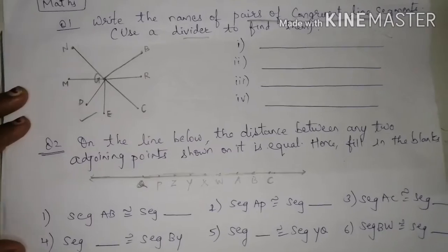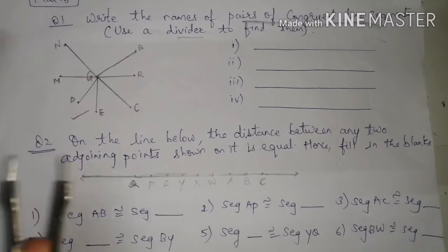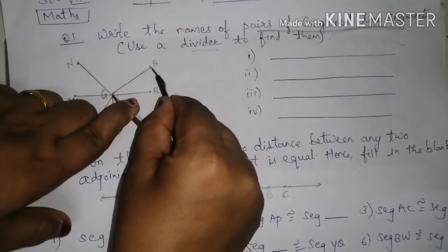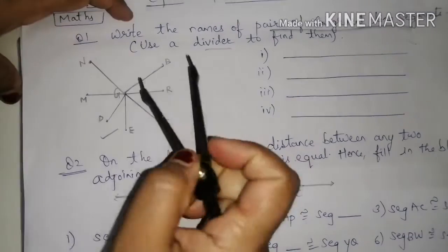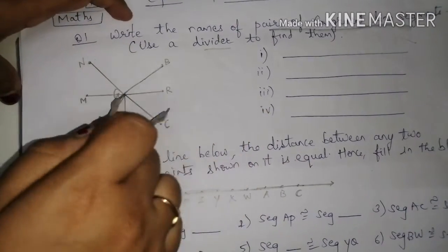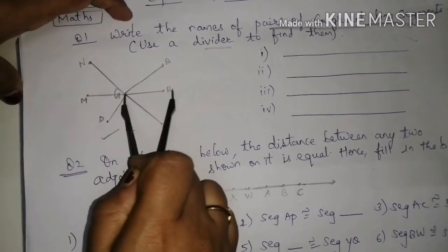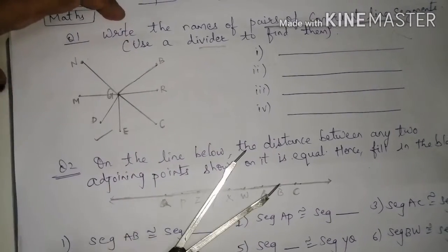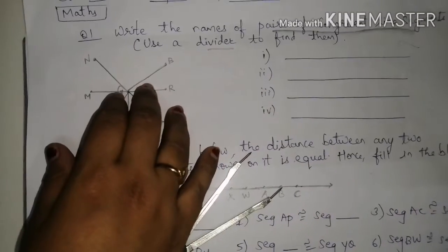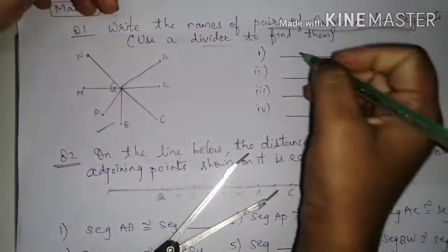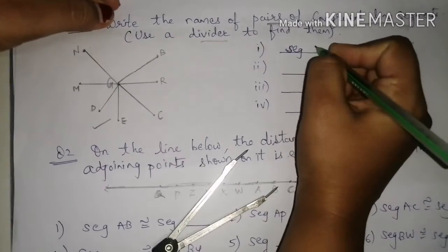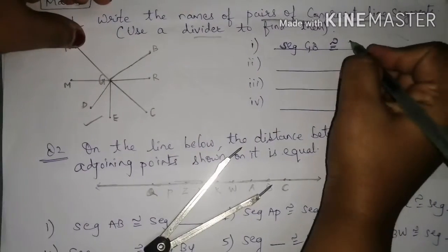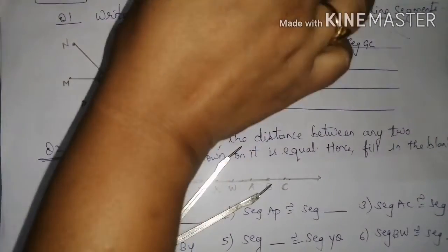We have to write the names of pairs of congruent line segments using the divider. The figure is given — place the divider like this on GB. Now place it on GC and check — GC comes out the same as GB. So our first congruent pair: segment GB is congruent to segment GC, because their measurements are the same.